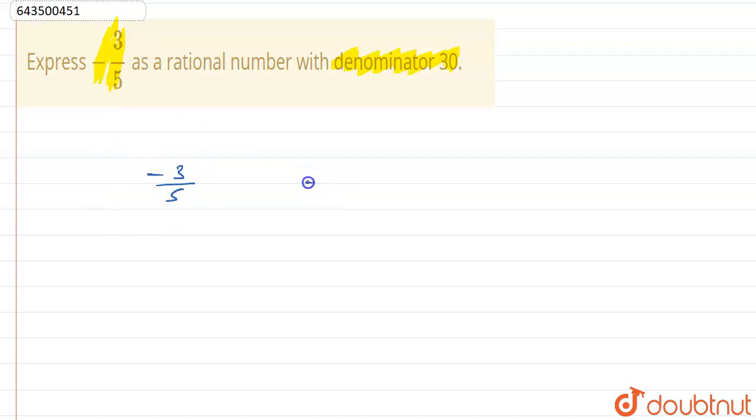Our rational number given is minus 3 by 5, and we need a rational number whose denominator is 30. So we have to express this rational number in these terms.